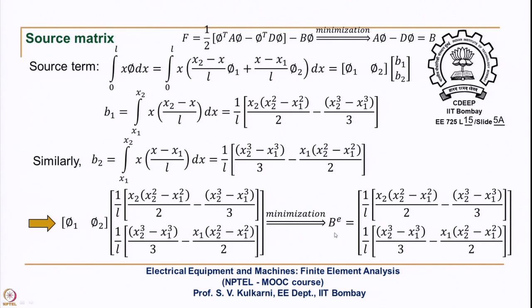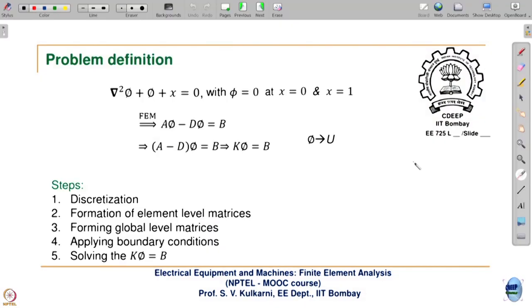After minimization — differentiating with respect to phi1 and then phi2 — we simply get b1 and b2. This is the B matrix. Thus we have understood how to calculate all three matrices A, D, and B. A and B were already seen for Poisson's equation, but the D matrix is required when solving the wave equation or diffusion-type equations.